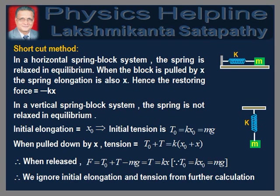In a vertical spring-block system, the spring is not relaxed in equilibrium. If the initial elongation is equal to x0, then the tension in the spring T0 is equal to Kx0, which is also equal to mg. When the block is pulled further by x, the tension in the spring becomes T0 plus T, equal to K(x0 plus x). Therefore, when released, the restoring force F is equal to Kx. Hence, we can ignore the initial elongation and tension from further calculation without any loss of accuracy.